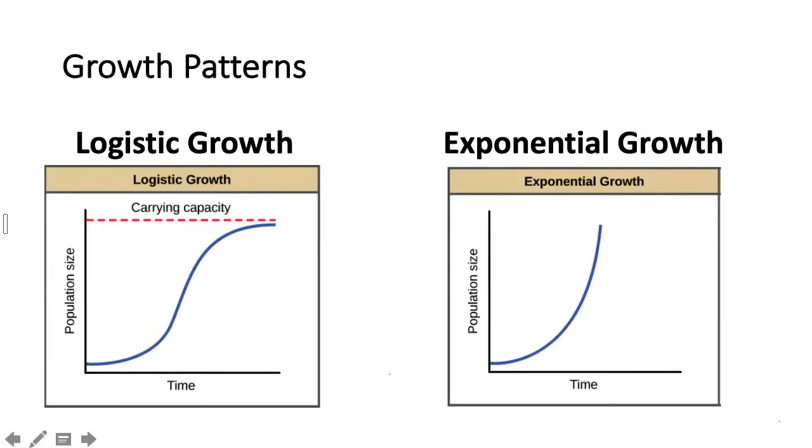You're going to need to understand some concepts around growth patterns for different types of organisms as well. A lot of organisms are going to experience exponential growth early on in their populations. So when their populations are small, when they don't really have any limits on food and resources, they'll grow at a near vertical rate after they get going. So like we see in the graph on the right, this is rare for organisms to maintain for very long though.